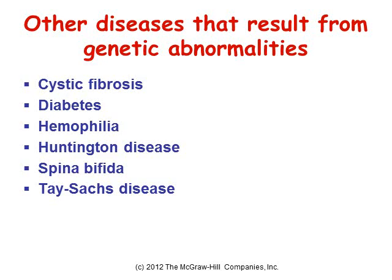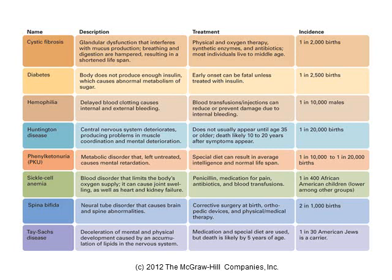Other diseases resulting from genetic abnormalities include cystic fibrosis, diabetes, hemophilia, Huntington's disease, spina bifida, and Tay-Sachs disease. A chart shows all these diseases along with their description, treatment, and incidence. Cystic fibrosis results in a shortened lifespan. People with diabetes usually don't produce enough insulin, causing an abnormality in their metabolism of sugar, which is why they cannot eat high-sugar foods like cake and ice cream.